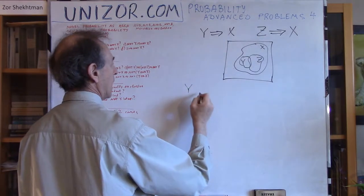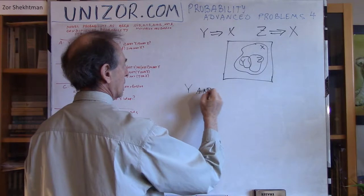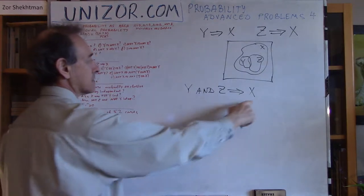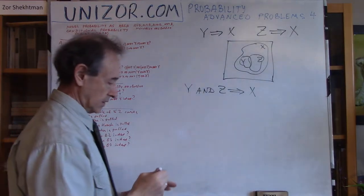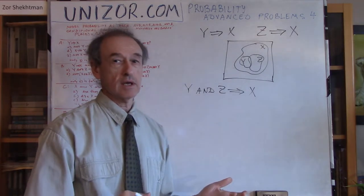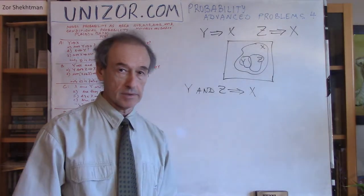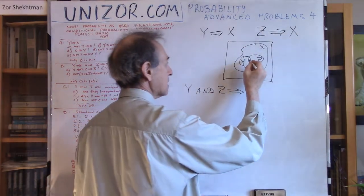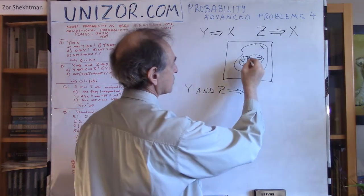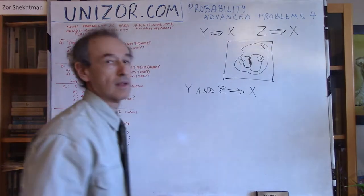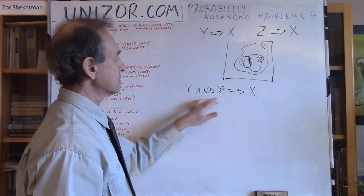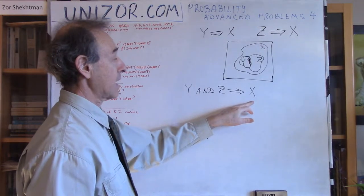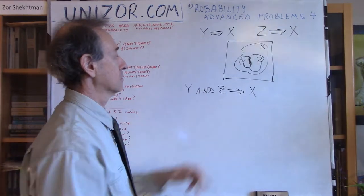Now the questions. From Y AND Z follows X — is this true? Y AND Z means both events happened, so the point falls inside the intersection of Y and Z. If the point is inside that intersection, does it fall inside X? Yes, absolutely — since both Y and Z are inside X, their intersection is also inside X. So this is true.